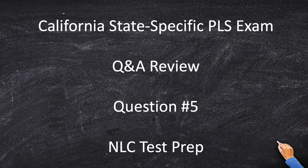Welcome to the California state-specific exam Q&A review, question number five. California is a public land state that has sections, townships, ranges, and meridians. The California board expects you, the newest land surveyor in the state, to be able to competently and confidently practice public land law and public land surveys.